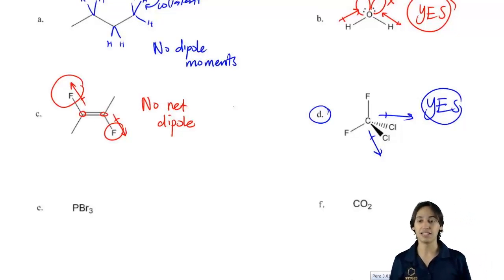All right, so for E I have PBr3 and I'm just going to say that P obviously has the highest bonding preference because phosphorus can make three bonds, likes to make three bonds and bromine only likes to make one.